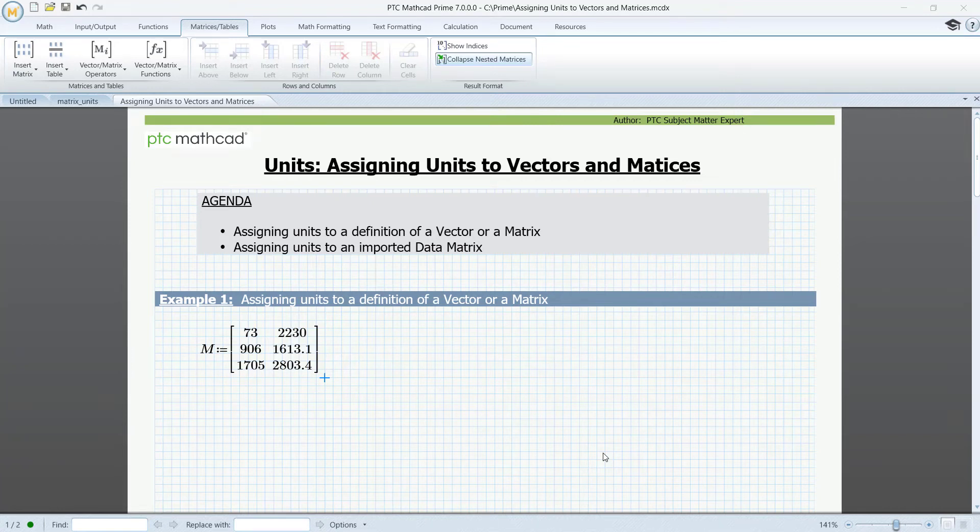Welcome to this video on assigning units to vectors and matrices. If we want to assign the same unit to all elements in a matrix or a vector, it's fairly simple. Just write the unit after the matrix or the vector and all elements will have this unit assigned.